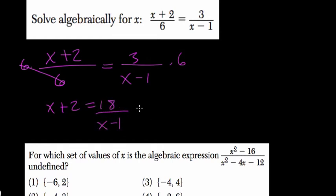Next, I want to get my x minus 1 out of the denominator. Multiply both sides by x minus 1.